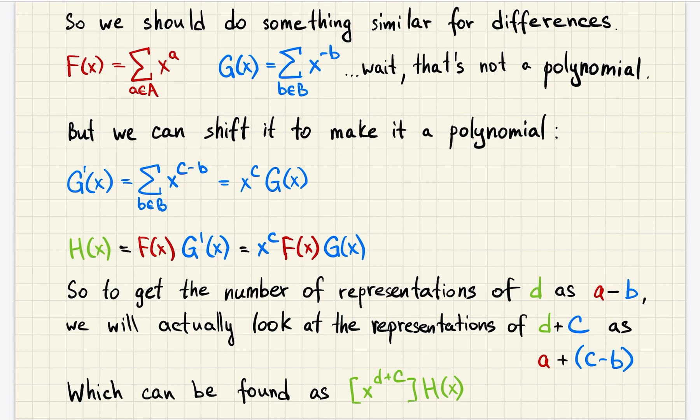And now look at the product of f and g prime. g prime is a polynomial now because all these numbers are integers and non-negative. And the product of f and g prime is the product of f and g and x to the power of c.